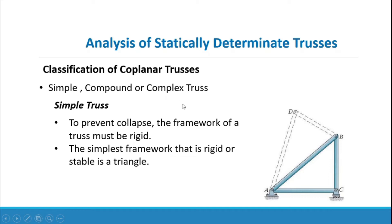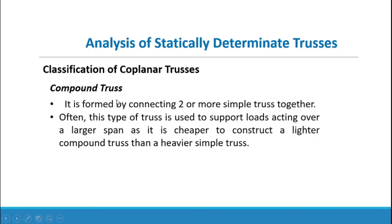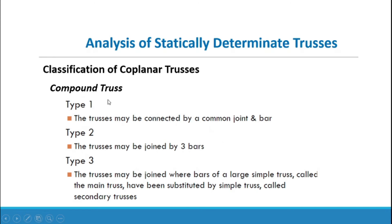Coplanar trusses are classified as simple, compound, or complex. For a simple truss, to prevent collapse the framework must be rigid. The simplest rigid framework is a triangle, which forms the basis of a simple truss. A compound truss is formed by connecting two or more simple trusses together. This type is often used to support loads over larger spans, as it is cheaper to construct a lighter compound truss than a heavier simple truss.